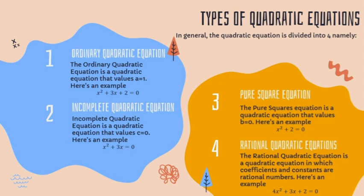Second, the incomplete quadratic equation. The incomplete quadratic equation is a quadratic equation where the value of c equals 0. Here is an example: x² + 3x = 0. Third, the pure square equation. The pure square equation is a quadratic equation where the value of b equals 0. Here is an example: x² + 2 = 0.